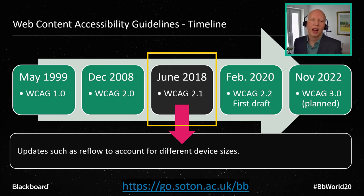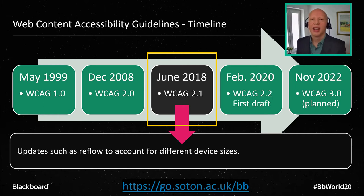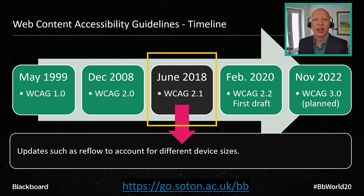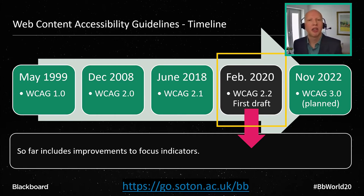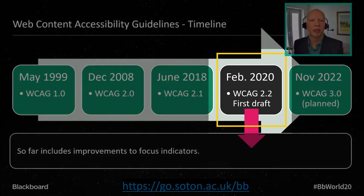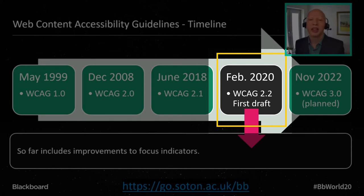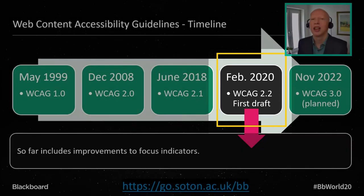A couple of years ago — ten years since the last update — there was a big update to WCAG 2.1, the Web Content Accessibility Guidelines. That was more designed to account for the devices we use to connect to the internet these days, such as iPhones, iPads, and smart TVs. A key aspect is having content reflow to suit different device sizes — what we tend to think of as being responsive. Just a few months ago in February, the first draft of WCAG 2.2 was released, which included improvements to focus indicators. In a couple of years' time, we expect the next generation of accessibility guidelines, with improvements to allow for more effective automated testing.